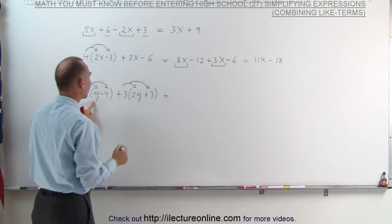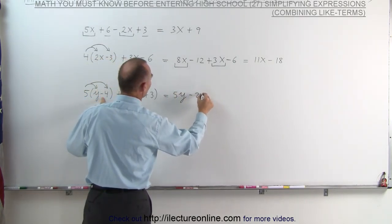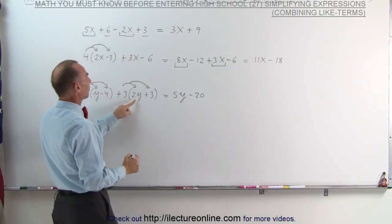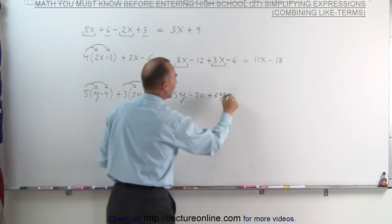5 times a single y is 5y. 5 times a negative 4 is a negative 20. 3 times 2y is 6y. And 3 times 3 is 9.